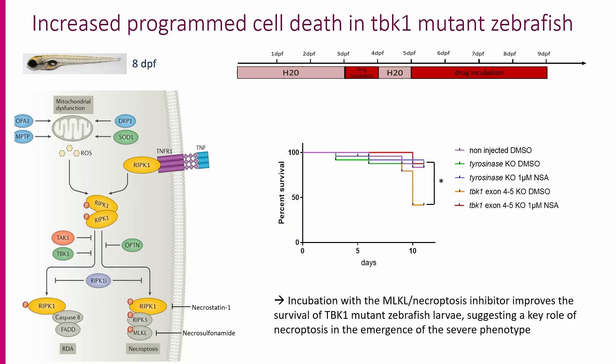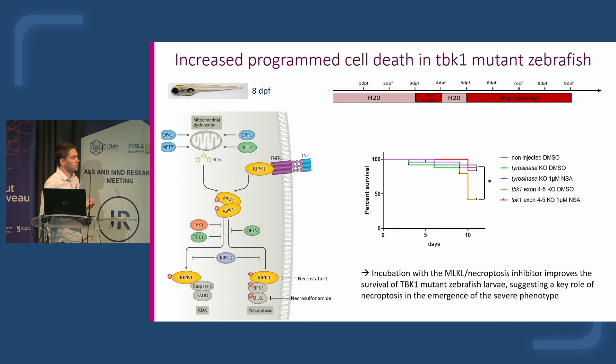This is consistent with work from the Uran lab suggesting that RibK1 could play a central role in ALS pathogenesis and could be an interesting therapeutic target, using inhibitors of its activity like necrostatin-1 or necrosulfonamide — inhibitors that are actually being investigated in clinical trials. We tested one of these inhibitors on zebrafish larvae using a similar incubation approach, and it was sufficient to rescue the survival of TBK1-deleted fish.